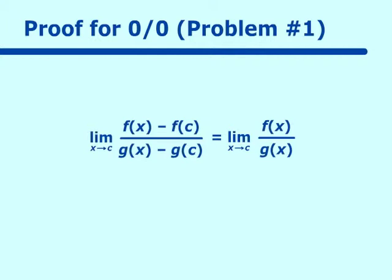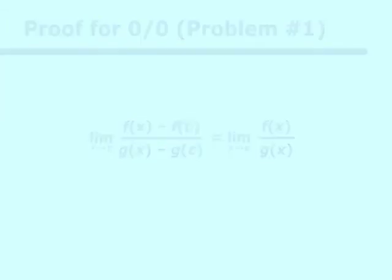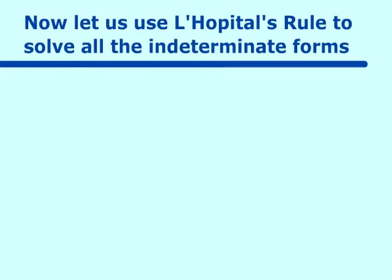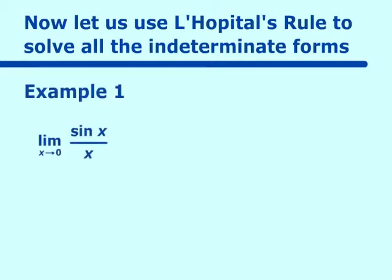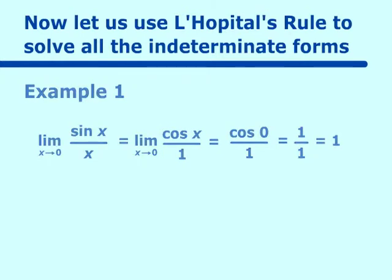We could prove all the rest, but that gives a taste of a simple proof. Now let's use L'Hopital's Rule on all the different indeterminate forms. Example 1: the limit as x approaches zero of sin(x)/x. This is a zero over zero type, so it's indeterminate. Applying L'Hopital's Rule, we take the derivative of sin(x) — which is cos(x) — over the derivative of x — which is 1. Evaluating gives cos(0)/1 = 1.